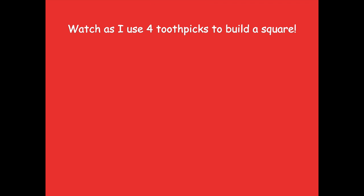Watch as I use four toothpicks to build a square. Here's one — I need a marshmallow to help stick it together. There's another one. I got to get these next ones to stick together. Now I have my four toothpicks and I use them to build a square. I had to use my marshmallows so the sides would stick together at those corners. Otherwise if I were to pick this up it would fall right down — it wouldn't hold together.